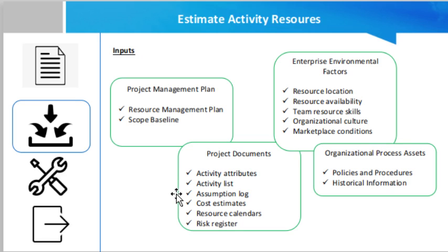The activity list identifies the activities that will need resources. The assumption log may have information on productivity factors, availability, cost estimates, and approaches to work that will influence the nature and number of team and physical resources. Cost estimates — the cost of resources may impact resource selection from quantity and skill level perspectives.